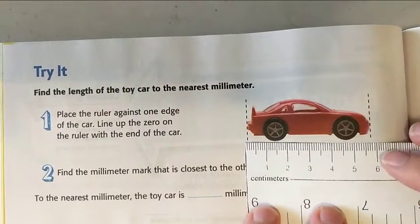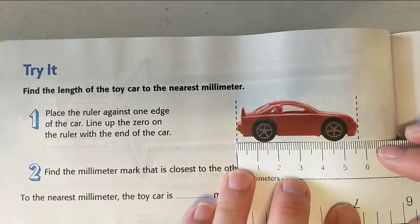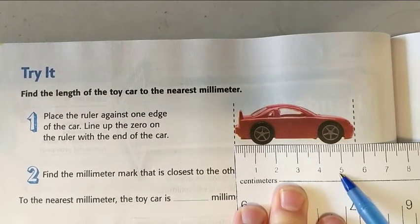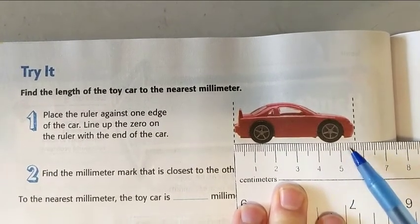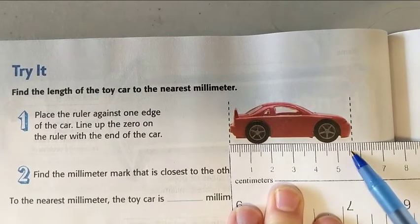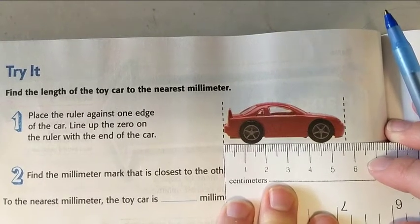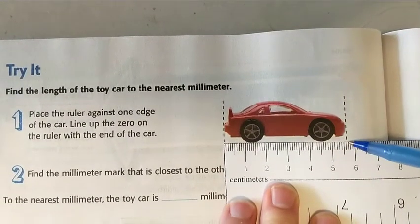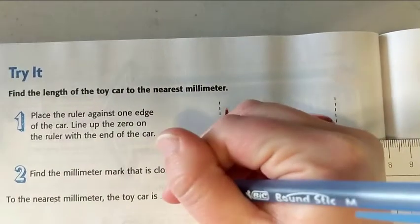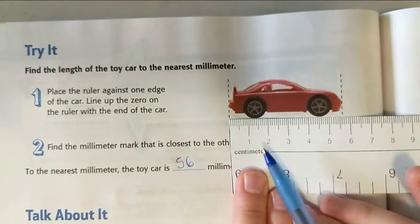I can go 10, 20, 30, 40, 50, 51, 52, 53, 54, 55 at the big mark, 56. It looks like it's just about 56 if I line it up right between 56 and 57, but I'm going to call that 56. So to the nearest millimeter, it's 56 millimeters.